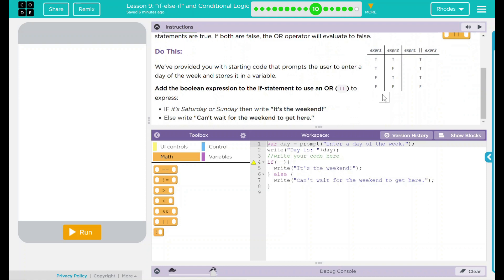We have a do this. We've provided you with the starting code that prompts the user to enter a day of the week and stores it in a variable. Add the Boolean expression to the if statement to use the OR expression. If it's a Saturday or Sunday, then write it's the weekend. Else, write can't wait for the weekend to get here.